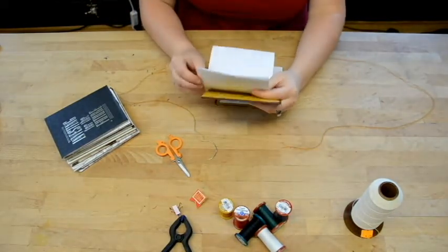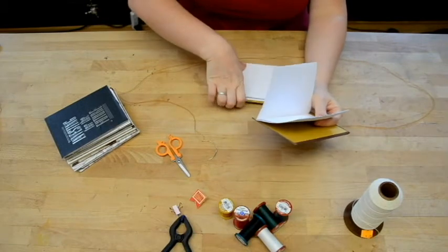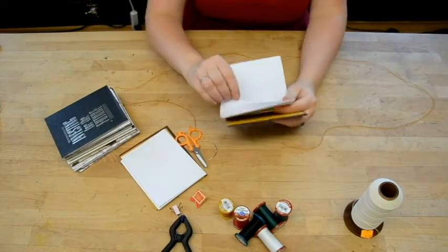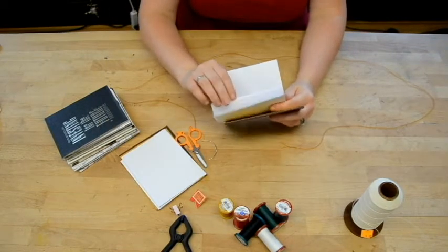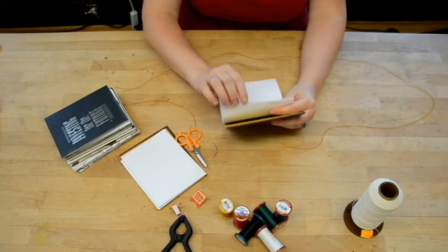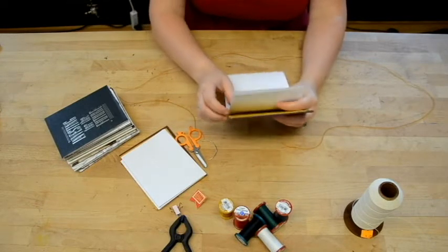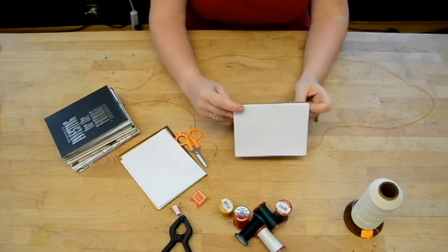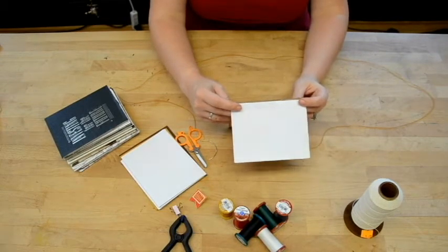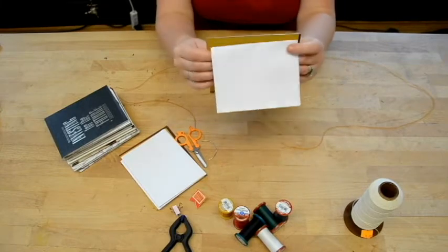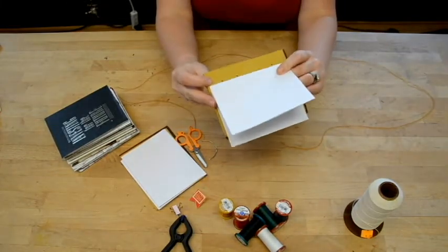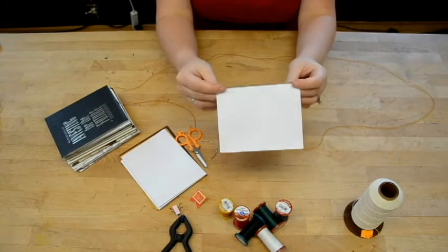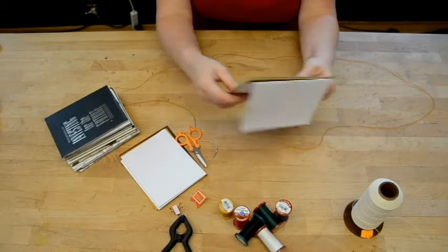You take your cover and your first signature. You're going to open it up to the very center point. What you want to do is you want to make sure that the edge of the paper lines up with the edge of the book. You do not want to line it up with the holes. You line it up with the edge, the cut edge of the book.